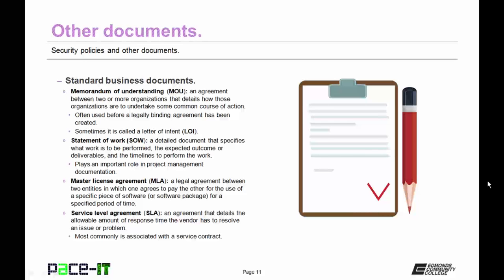Then there is the Statement of Work, or SOW. It's a detailed document that specifies what work is to be performed, the expected outcome of the work or the deliverables, and the timelines to perform that work. The SOW plays an important role in project management documentation.